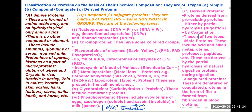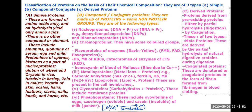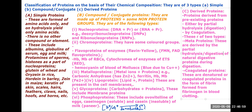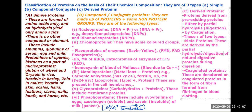Metaproteins are derived by the partial hydrolysis or digestion of natural proteins taken in diet. The digestion sequence goes: proteins → peptones → peptoses → peptides → dipeptides → amino acids.